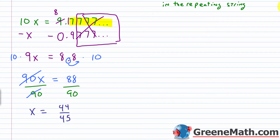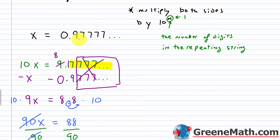Remember, we said x was equal to this repeating decimal, so 44 over 45 equals 0.97777... where the 7 repeats forever. If you punch 44 divided by 45 into a calculator, you'll get 0.97 where the 7 repeats. Your calculator may truncate and stop displaying sevens, or it may round the final digit to an 8 — but the actual value has the 7 repeating forever.